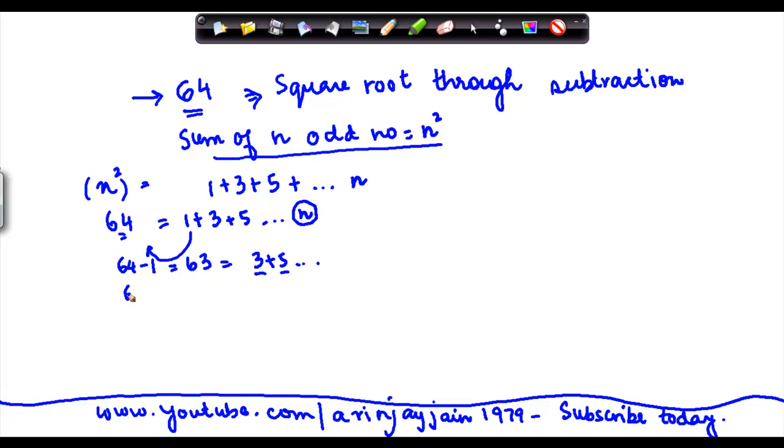So I subtract 64 minus 3—not sorry, it's actually 63 because 1 I have already subtracted. I would get 60, then from 60 I subtract 5, get 55, from 55 I subtract 7.